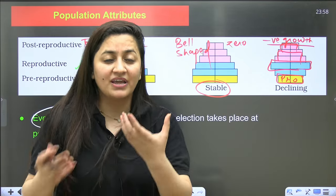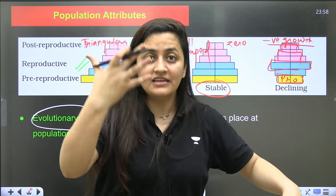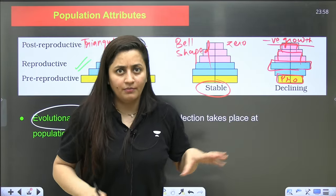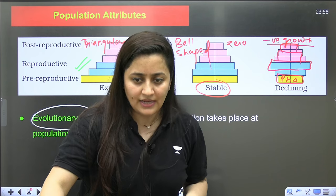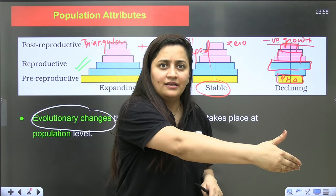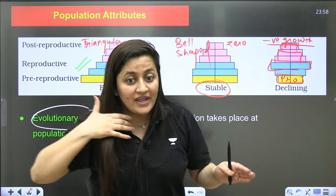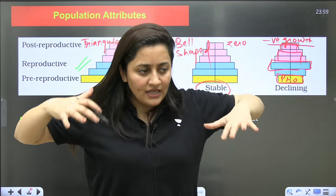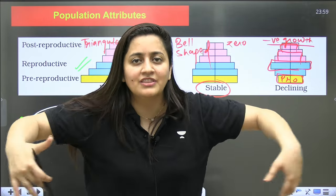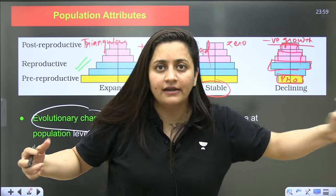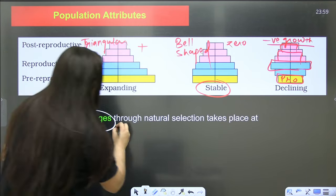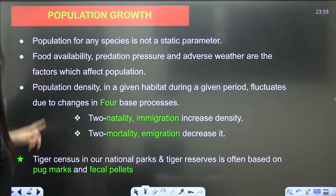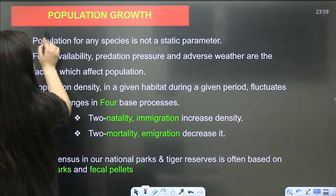When you talk about evolutionary changes, population is very important. Evolutionary changes like natural selection occur at the level of population. A single individual evolving doesn't help — when natural selection occurs at population level, those changes pass to the next generation, accumulate over time, and we get a new species. Evolutionary changes through natural selection take place at the population level — that's why population genetics is very important.